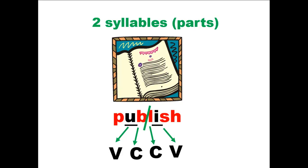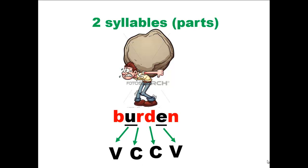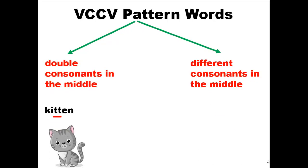One more time: words with VCCV pattern are divided into two syllables and the words are divided between the consonants. Words with VCCV pattern are divided into two groups: words with double consonants in the middle like the word kitten, and words with different consonants in the middle like the word napkin.